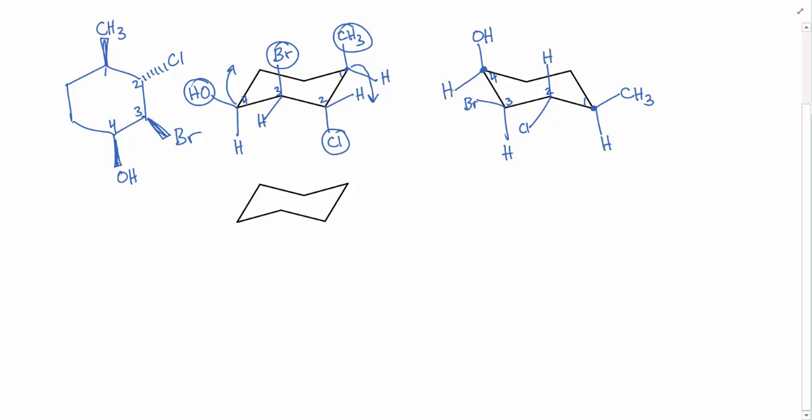That's the standard way of drawing a chair flip, is drawing this flipped version where number 1 is flipped down and number 4 has flipped up. Now, there's another way you can draw a chair conformation flip, which is by drawing the same base of the cyclohexane and simply picking a different carbon as number 1.